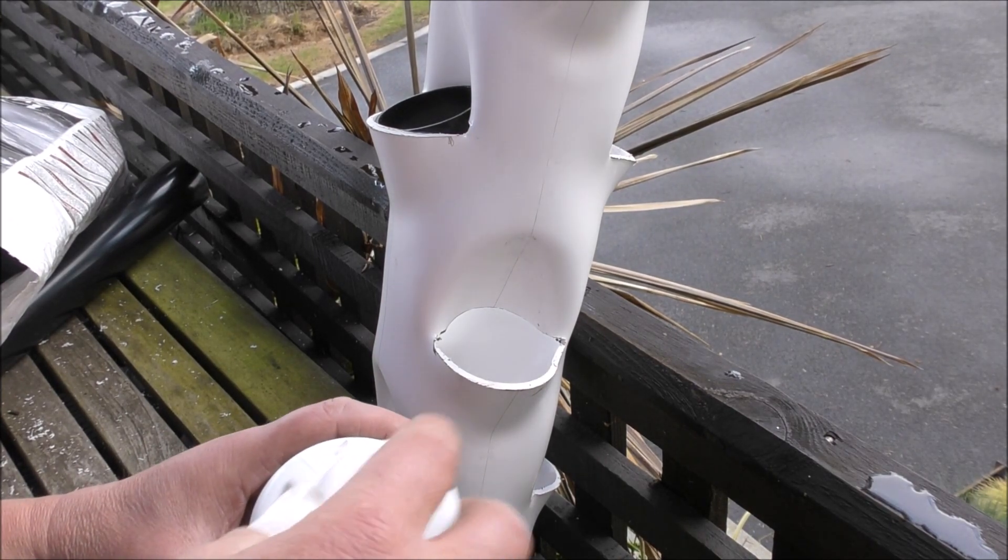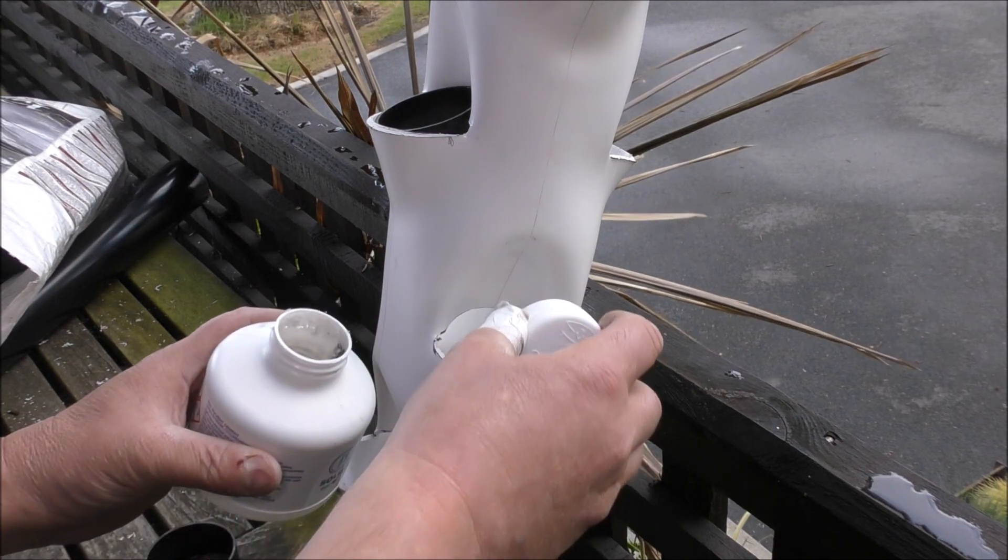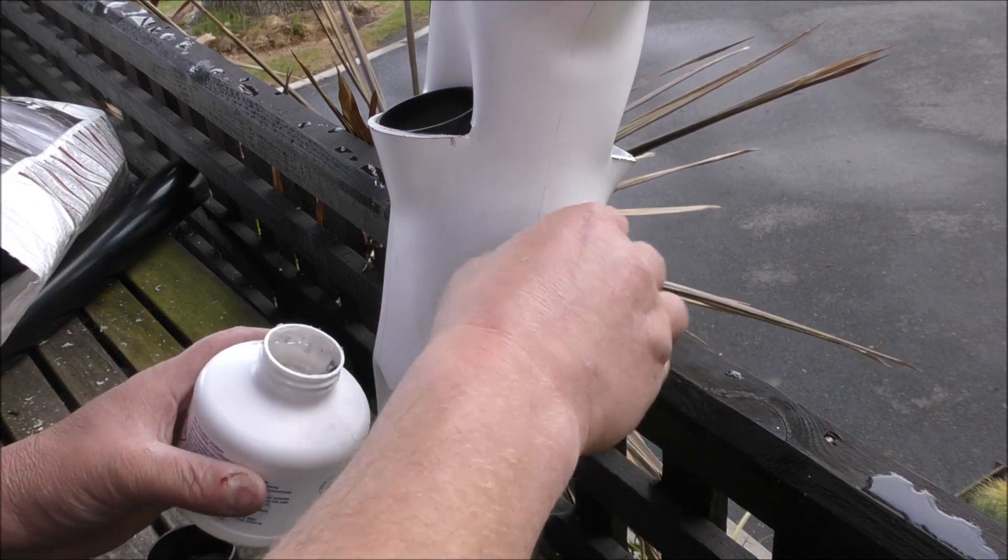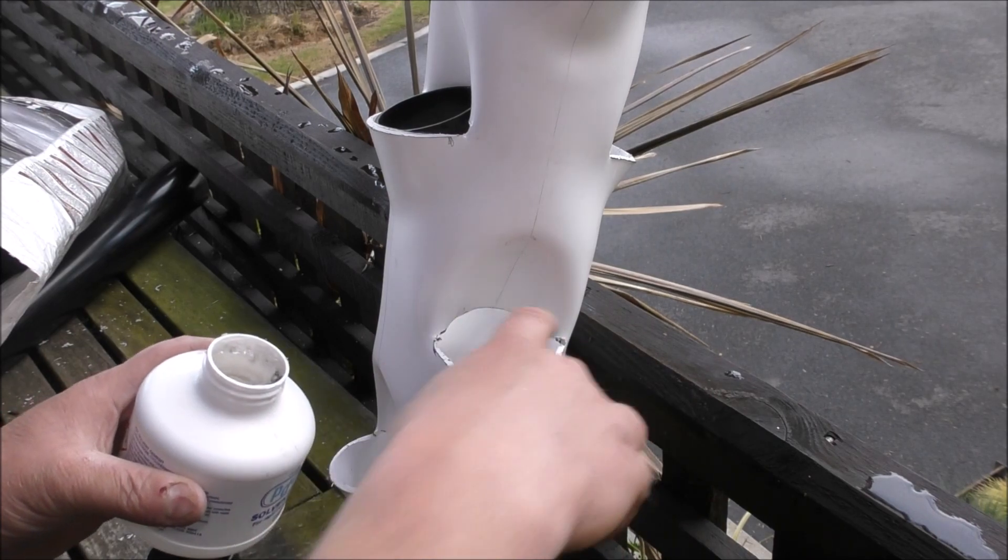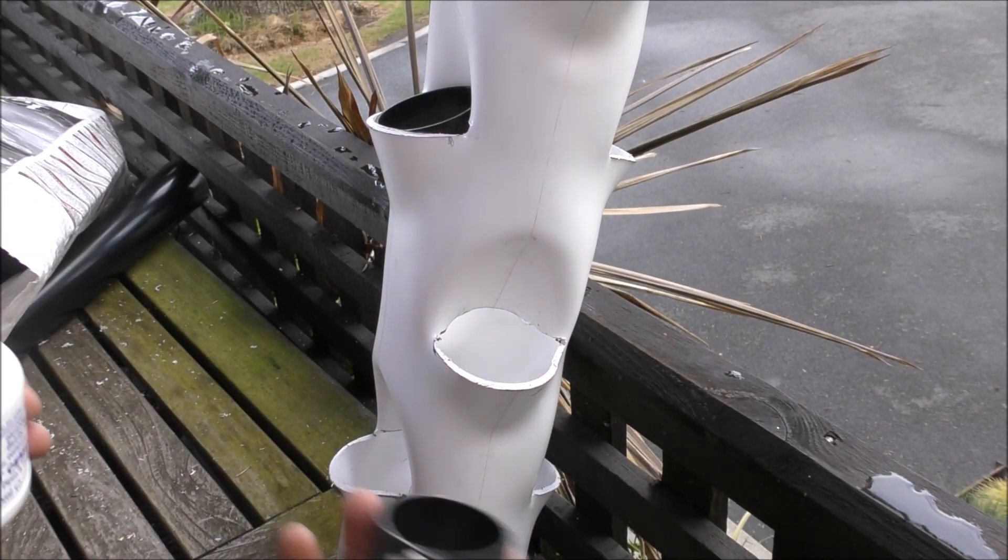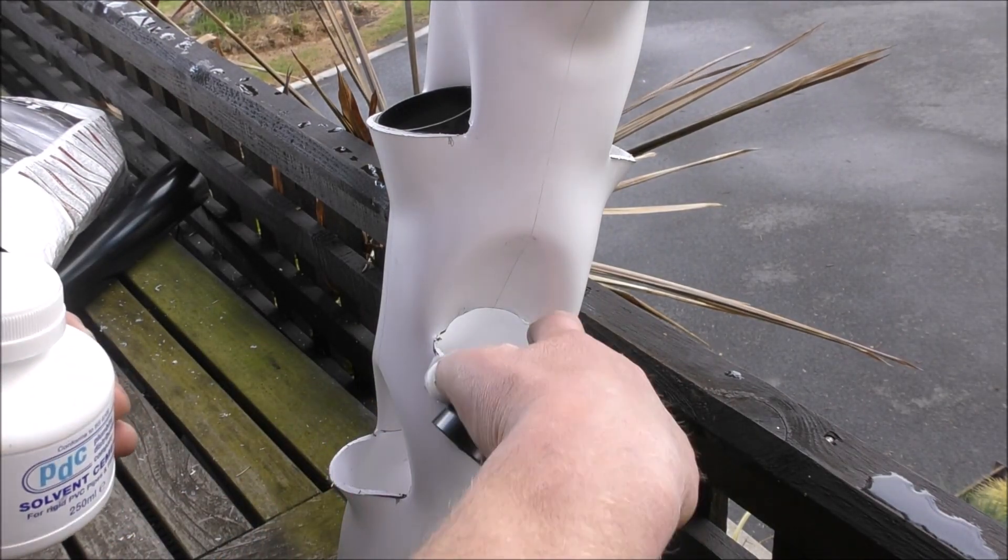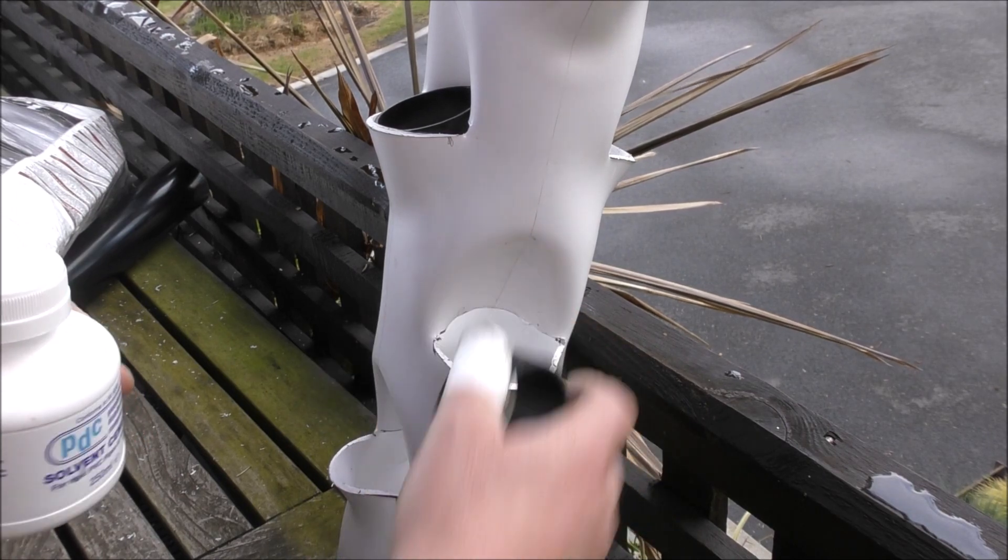And all we need to do is just put a little bit of glue on the back side and the front side. No need to put it on the sides because this collar isn't going to touch these sides here. It's only going to touch the front and the back.